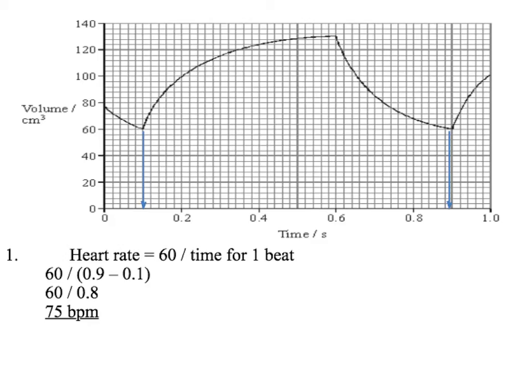This is a question where you've got enough information just using this graph to work out the cardiac output. First of all, we're going to work out the heart rate using the formula 60 divided by the time taken for one beat. The time taken for one beat — you're usually looking for peak to peak or trough to trough. You can see on the graph here we've got two troughs.